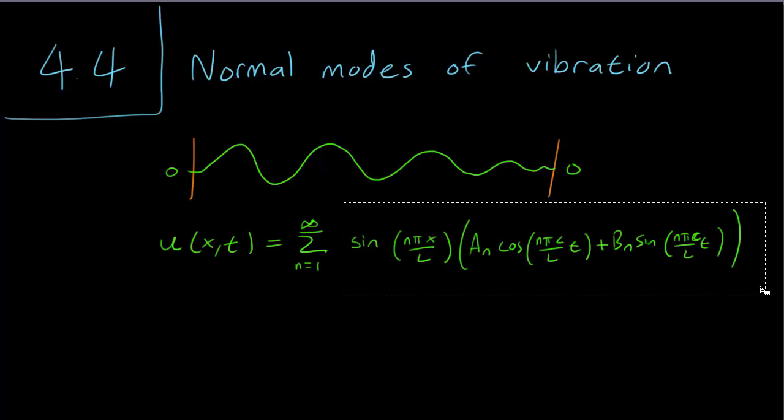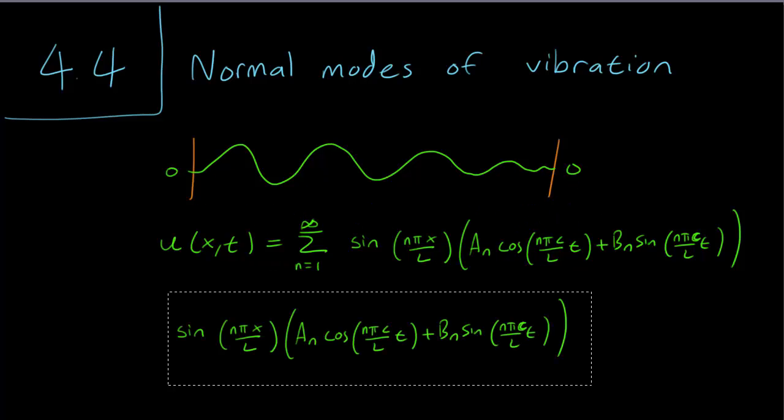So again, consider a string with fixed ends set at height 0, and we know from the previous video that we can write down our solution in this form as a sum of these terms involving sines and cosines. Now it turns out that we can write down these sum ends that we have here of infinite sum.